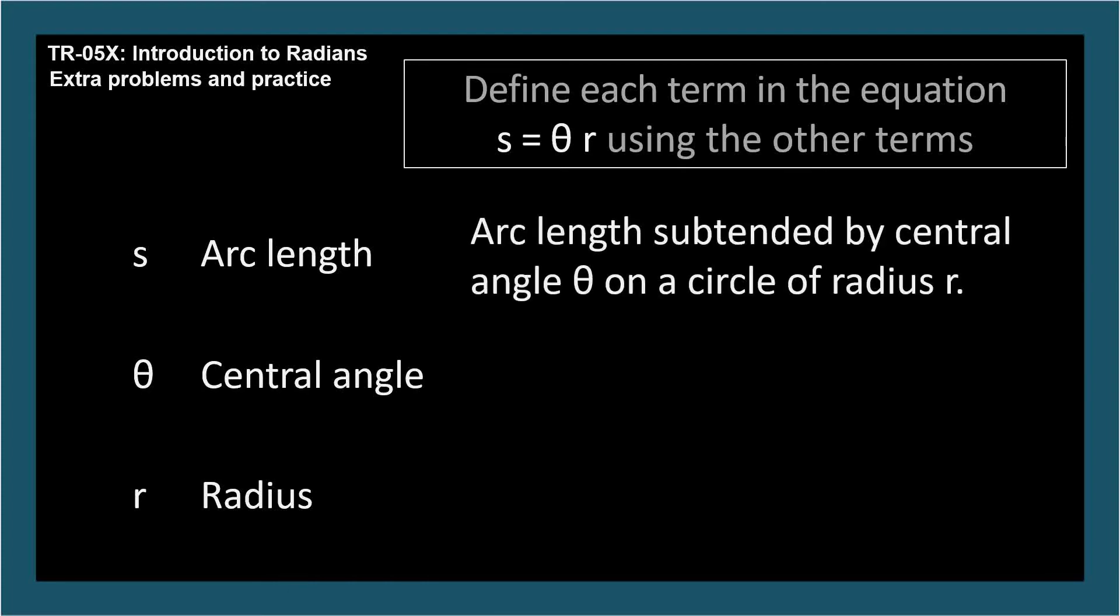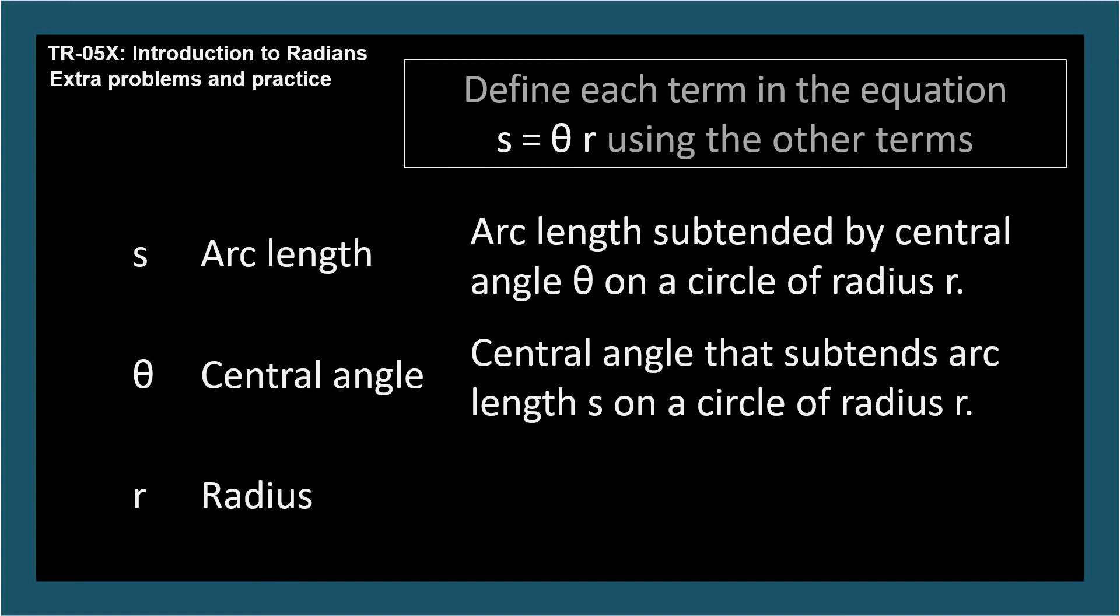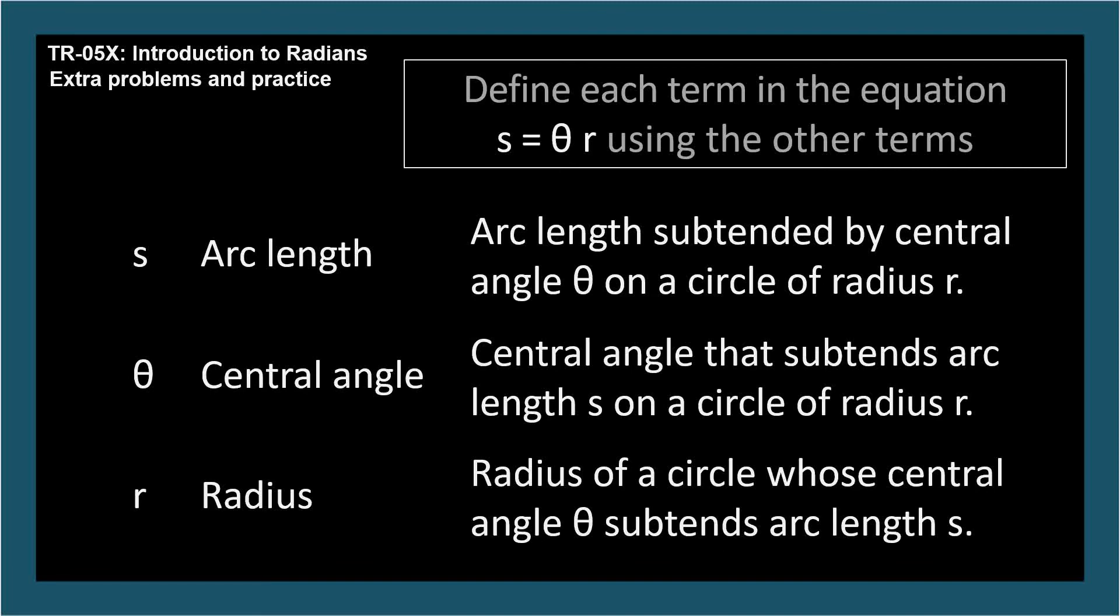S is the arc length subtended by a central angle theta on a circle of radius r. Theta is the central angle that subtends an arc length s on a circle of radius r. And r is the radius of a circle whose central angle theta subtends arc length s. The relationship between these concepts should be very familiar to you.